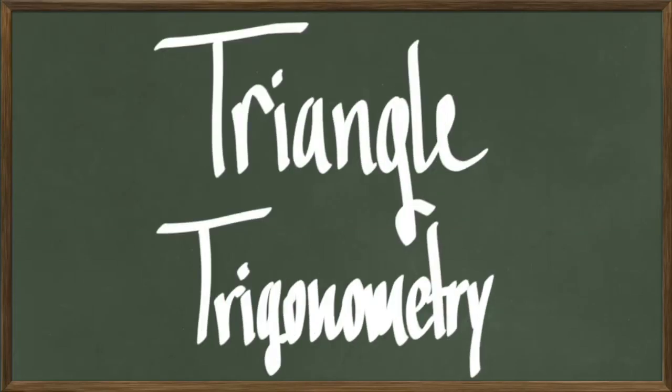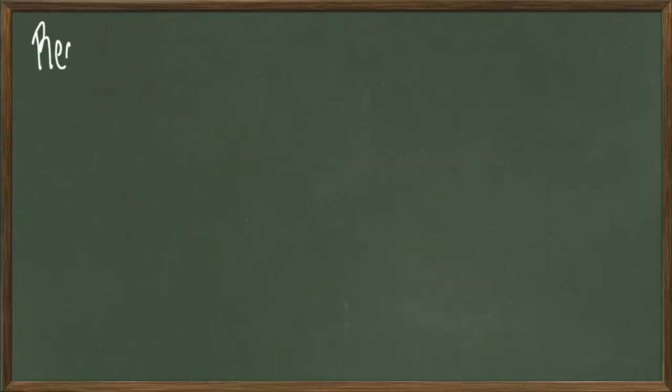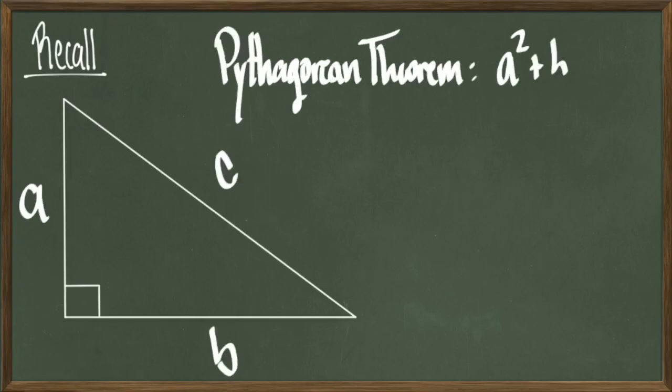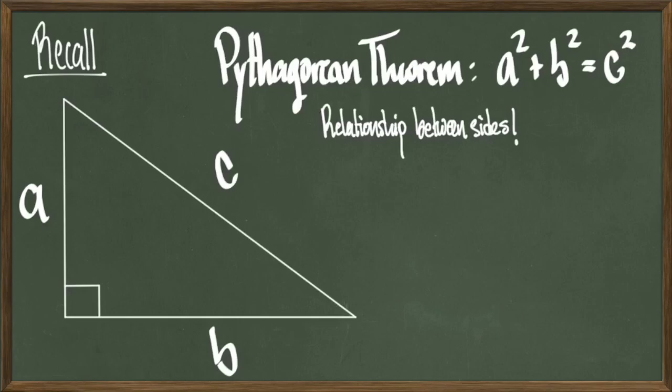Hey everyone, today we're going to be talking about triangle trigonometry. The study of trig ultimately starts with the study of a right triangle. We know that from the Pythagorean theorem that we have this relationship between the sides of the triangle, that is a squared plus b squared equals c squared, where a and b are the sides adjacent to the right angle, and c is the hypotenuse.